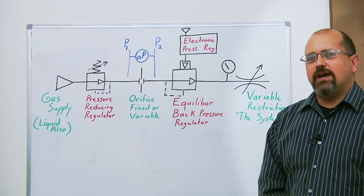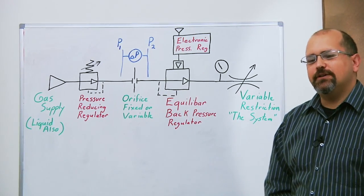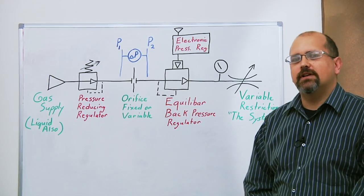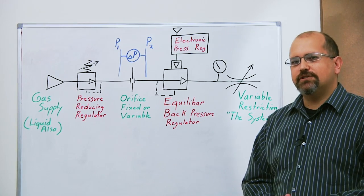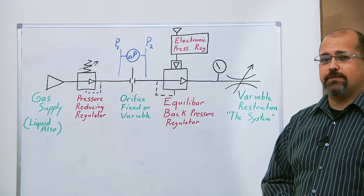Today I'm going to show you how to control mass flow rate using a back pressure regulator. This is particularly useful in applications where use of a mass flow controller is impractical. Mass flow controller use might be impractical due to high pressures or aggressive chemistries that are not compatible with the mass flow controller.